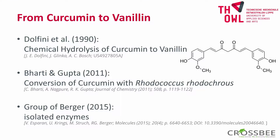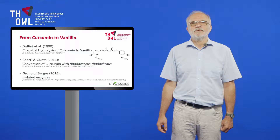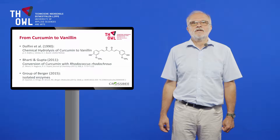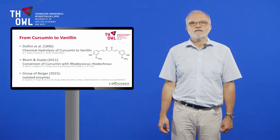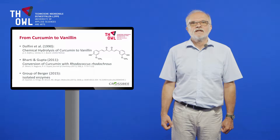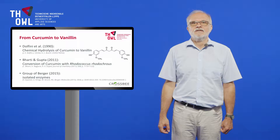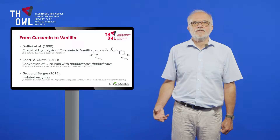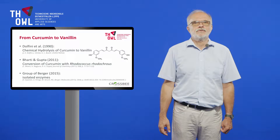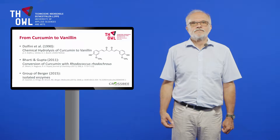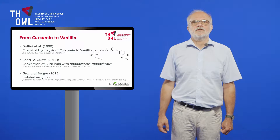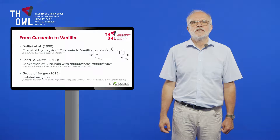The group of Berger from Hannover published in 2015 a process with three isolated enzymes. First, the phenolic hydroxyl groups were protected via acetylation. In a second step, the molecule was hydrolyzed by a laccase. And in a third step, the acetyl group was removed with a feruloyl esterase. This process is also not commercially feasible due to the low concentration and yields.